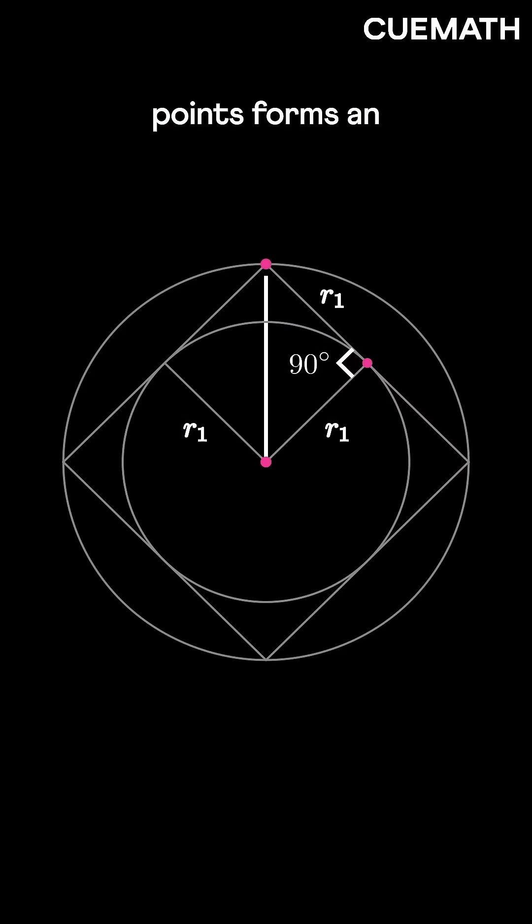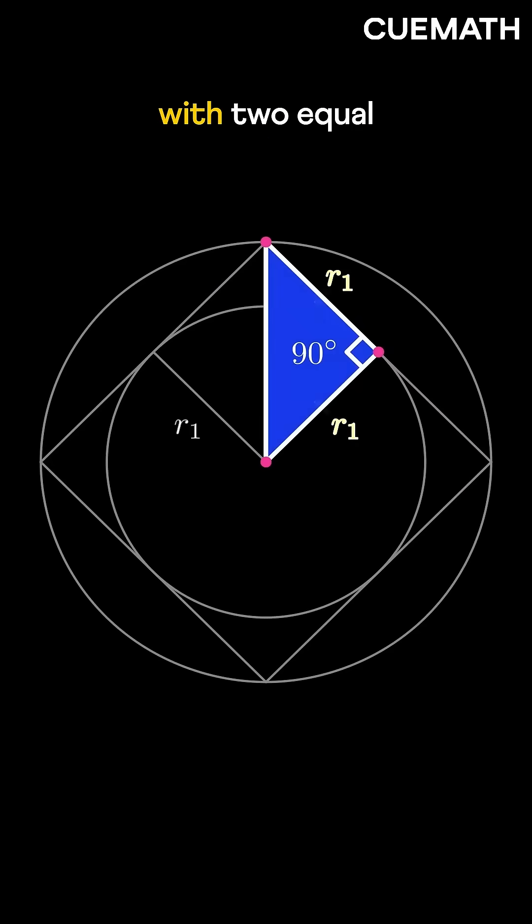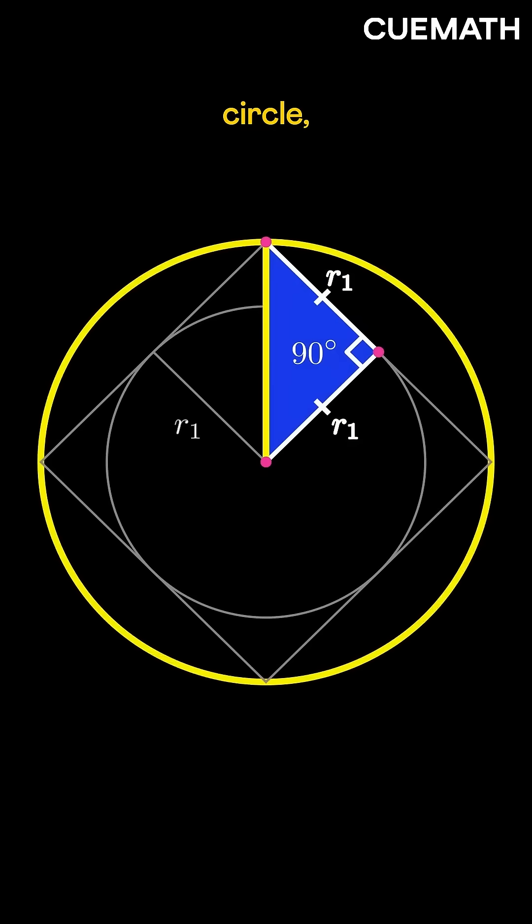Joining these two points forms an isosceles right triangle with two equal sides r1 and the hypotenuse as the radius of the larger circle, r2.